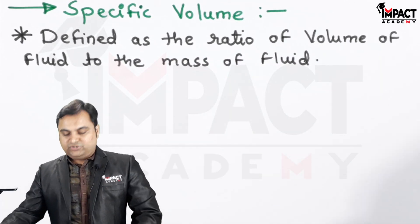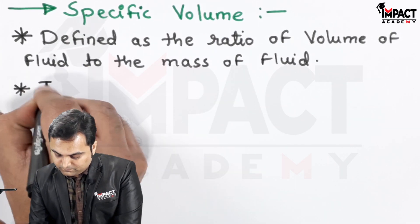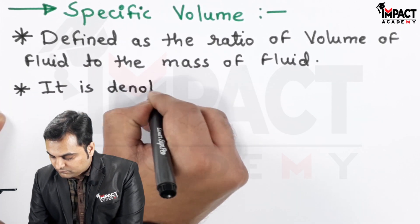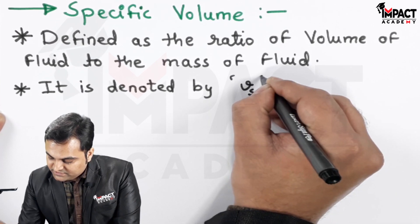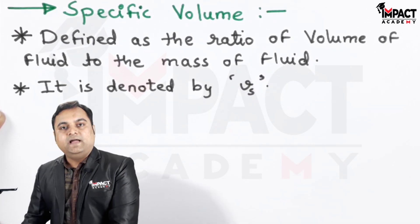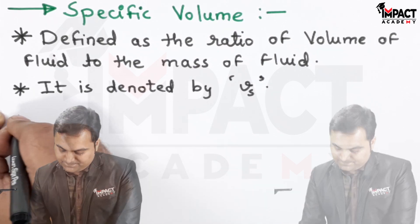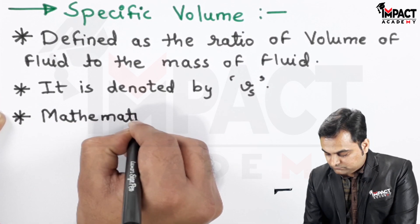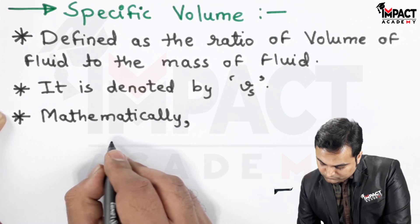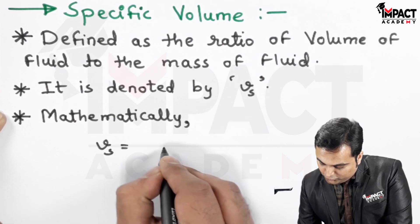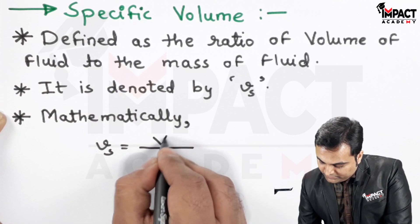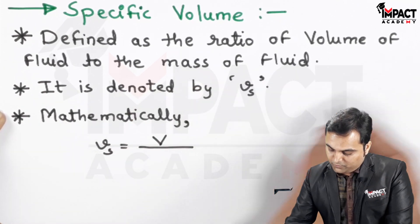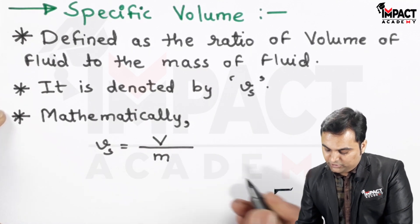Then it is denoted by small v suffix s, specific volume, and the formula is given by: specific volume is volume of fluid, that is volume capital V, upon mass of fluid, that is V upon m.